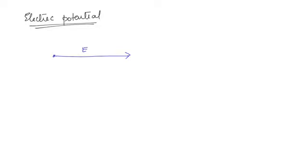If you want to move a charge from point A to point B along a field line, the charge will automatically move itself — you just place it at A and it experiences a force towards B. But if you want to move a charge from B to A, you have to do some work.